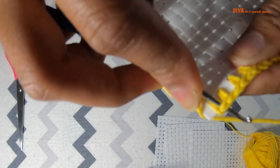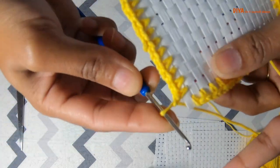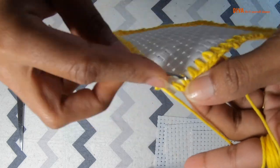Now when you come to an end, as you see I am pushing the hook through the mid part of two stitches.